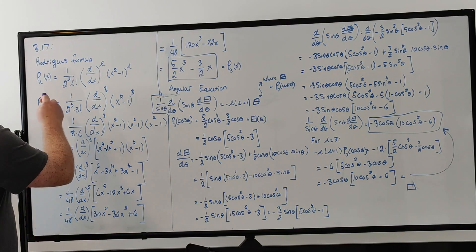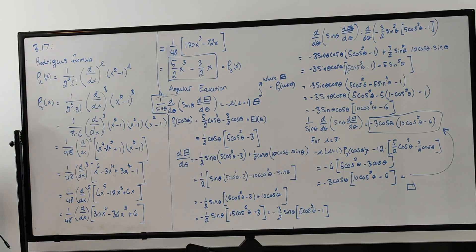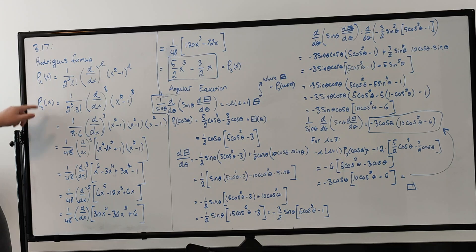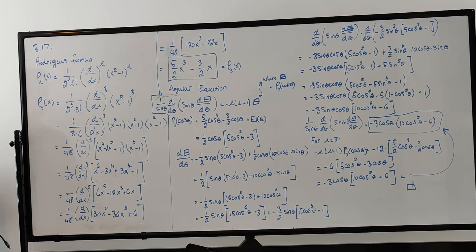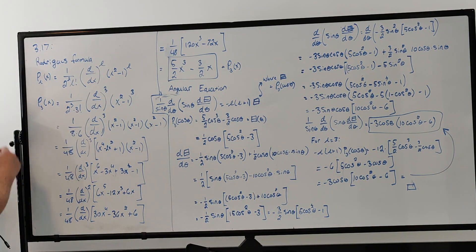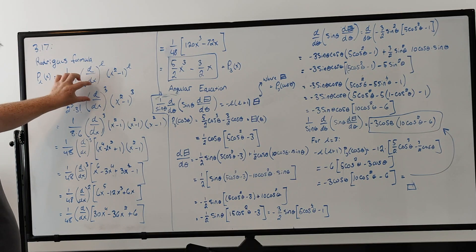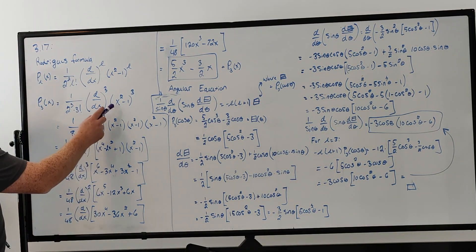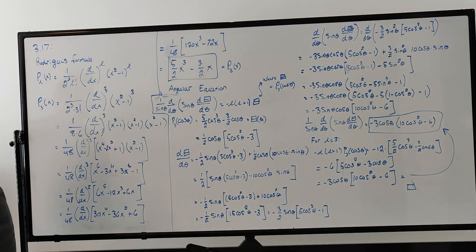Rodriguez's formula is a factory function for generating any Legendre polynomial. In terms of L, this is what it is. To get the third Legendre polynomial, we plug in L equal to 3: we have 1 over 2 cubed, which is 8, times 3 factorial, which is 6. We take the third derivative of x squared minus 1, all cubed.